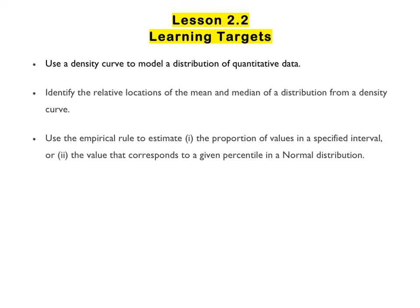The first one says to use a density curve — a new vocabulary word — to model a distribution of quantitative data. The second one says to identify the relative locations of the mean and median of a distribution from a density curve. We talked about relative location last time using z-score and percentile. And the third one says to use the empirical rule to estimate the proportion of values in a specified interval, or to estimate the value that corresponds to a given percentile in a normal distribution.